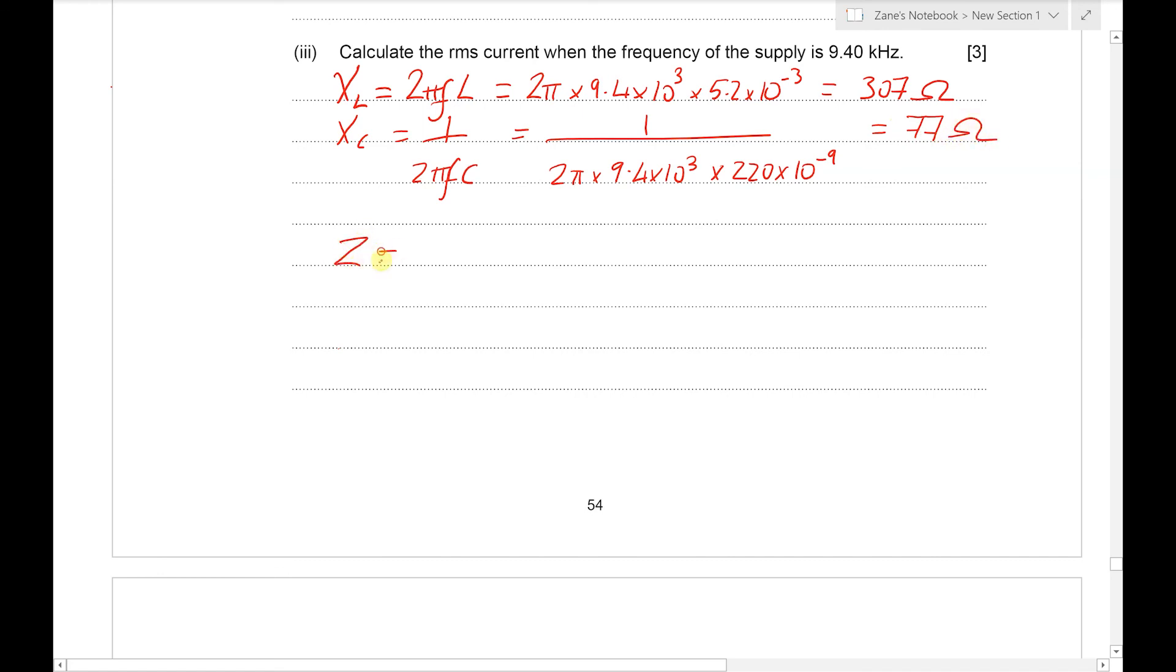Next we're going to calculate the impedance of the circuit Z from the square root of R² plus the difference between X_L and X_C squared. So it's going to be the square root of 82² plus (307 minus 77)², which will give us about 244 ohms. And finally the RMS current is calculated from the RMS PD divided by Z, so it's 12 over 244 which gives us about 0.049 amps.